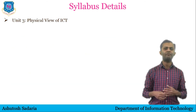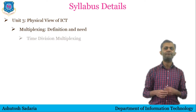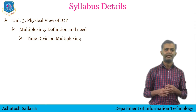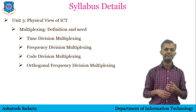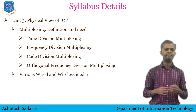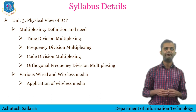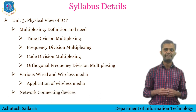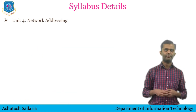The third unit is Physical View of ICT. In this, we will see multiplexing, its definition and need, and different types of multiplexing like Time Division Multiplexing, Frequency Division Multiplexing, Code Division Multiplexing and Orthogonal Frequency Division Multiplexing. We will also see various transmission media like wired media, wireless media and applications of wireless media in satellite communication, types of orbit and Indian achievements in satellite technology. Then we will see network connecting devices like switch, router, repeater, bridges and gateway, and IEEE standards for those.